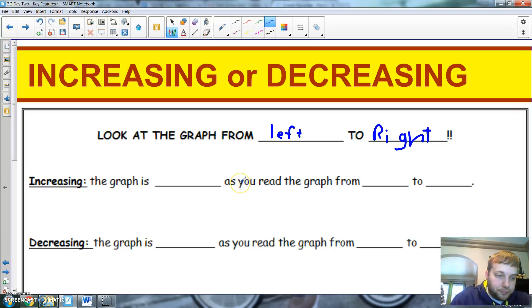So increasing means it's going up. It'll be going in an upward pattern. So the graph is going up, going up, as you read the graph from left to right. You'll get this here in a second.